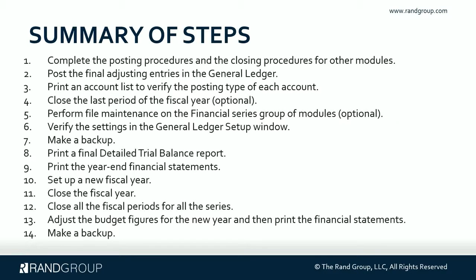Here's a summary of the steps. Step one: complete the posting and closing procedures for all other modules. Step two: post the final adjusting entries in the general ledger. Step three: print an account list to verify the posting type of each account. Step four: close the last period of the fiscal year — this is optional. Step five: perform file maintenance on the financial series group of modules — also optional. Step six: verify the settings in the general ledger setup window. Step seven: make a backup.